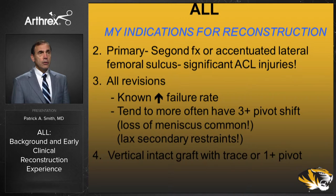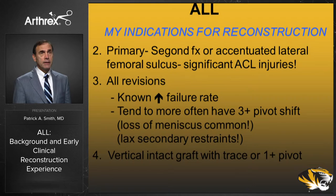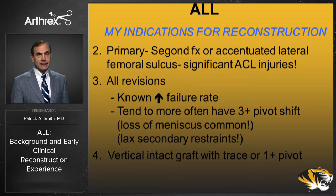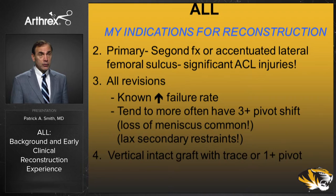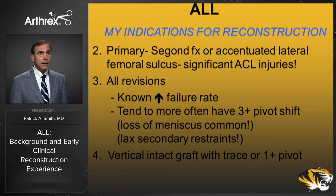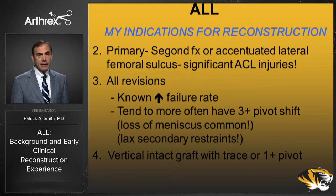In addition to the hyperlax female, if they have a primary Segond fracture that's a classic case — we know the ALL has been torn. Or if they have an accentuated lateral femoral sulcus on lateral X-ray showing that impaction injury, those are significant ACL injuries that may also need ALL reconstruction. For revisions, I am currently doing an ALL with all my cases, as revisions have higher failure rates, very positive pivot shifts, and are inherently more unstable. I also have one case with a vertically intact ACL graft with a one plus pivot where I added the ALL instead of a revision, and that patient has done well.